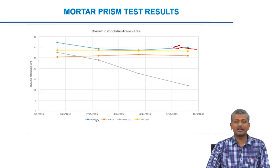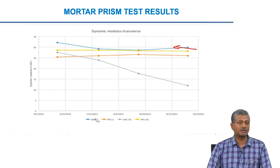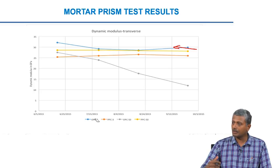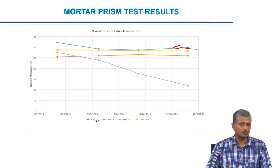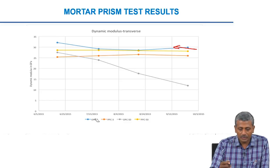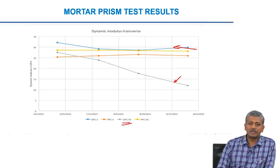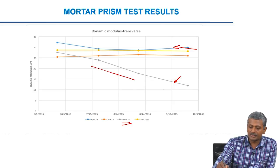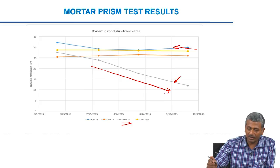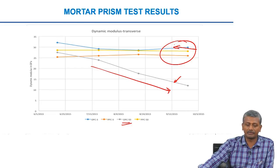Looking at the change in dynamic modulus, measured by ascertaining the resonant frequency of the material — as deterioration of concrete happens, the resonant frequency reduces. This is dynamic modulus indirectly measured using a non-destructive test. For the OPC mortar specimen stored in the high-concentration sulphate solution, the dynamic modulus reduced significantly over 32 weeks of exposure, while all other specimens showed fairly consistent dynamic modulus without any decrease.